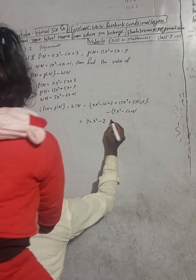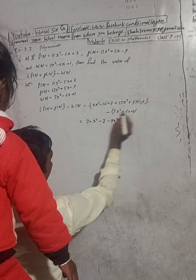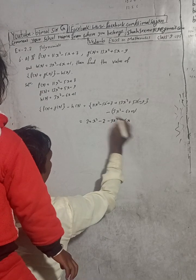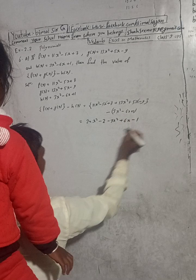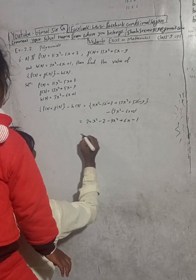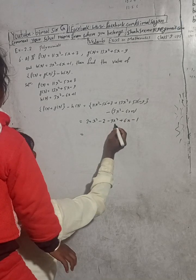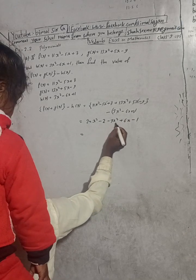So combining all terms: 24x² and now subtracting 3x² gives plus 21x², with plus 6x, and the constants give minus 3.